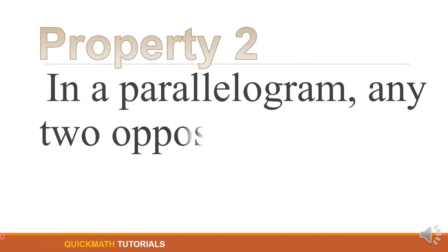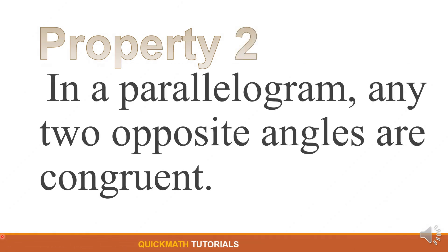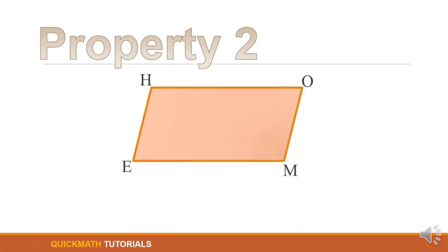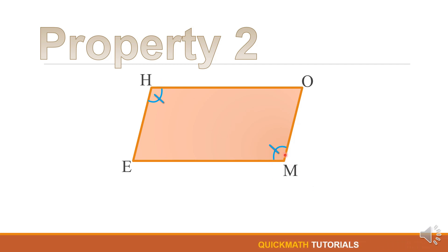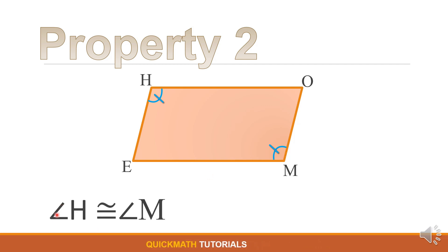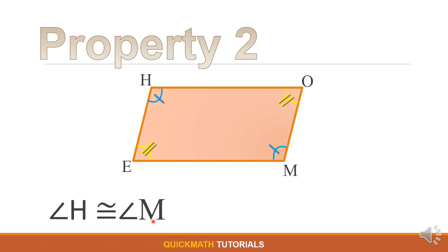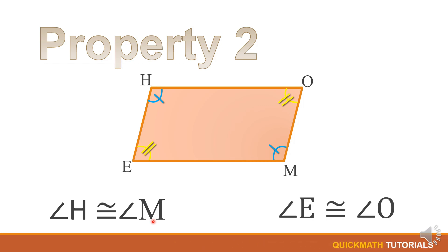The second property is: in a parallelogram, any two opposite angles are congruent. In illustration, the opposite angles are angle H and angle M — thus they are equal or congruent: angle H is congruent to angle M. Another pair of opposite angles are angle E and angle O, and they are congruent: angle E is congruent to angle O.